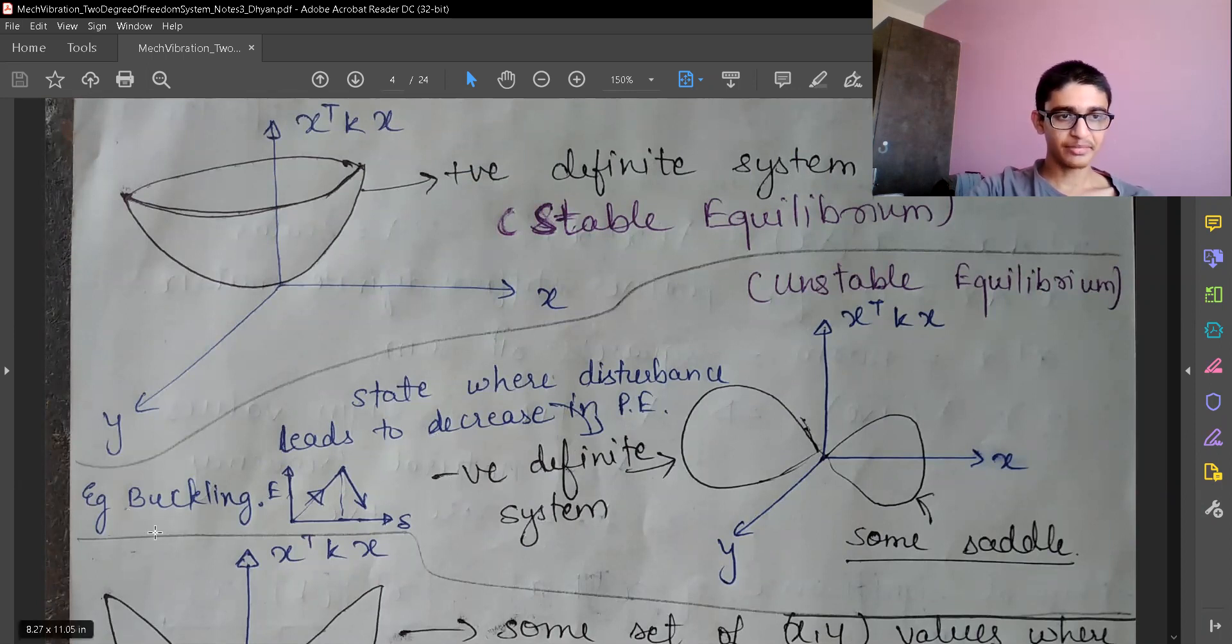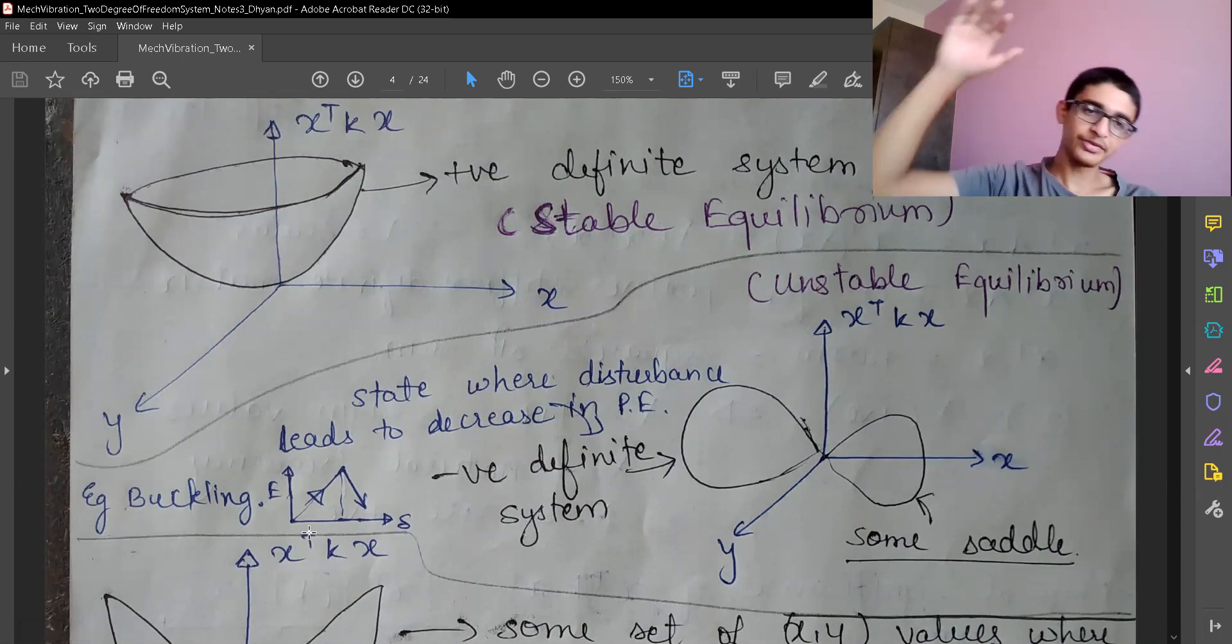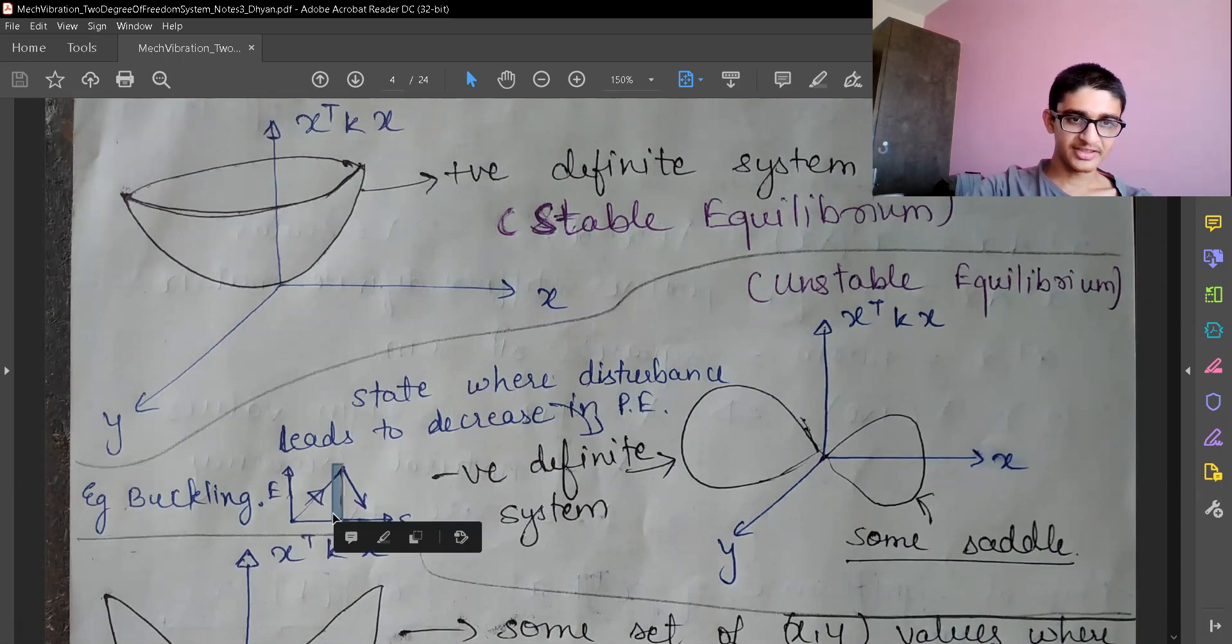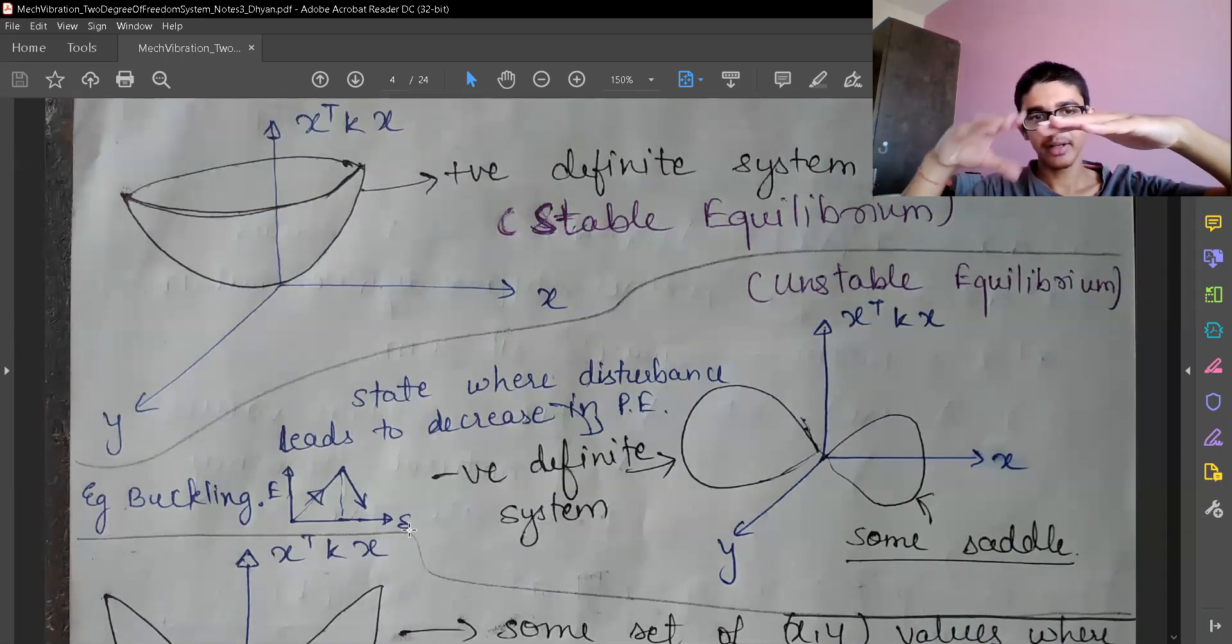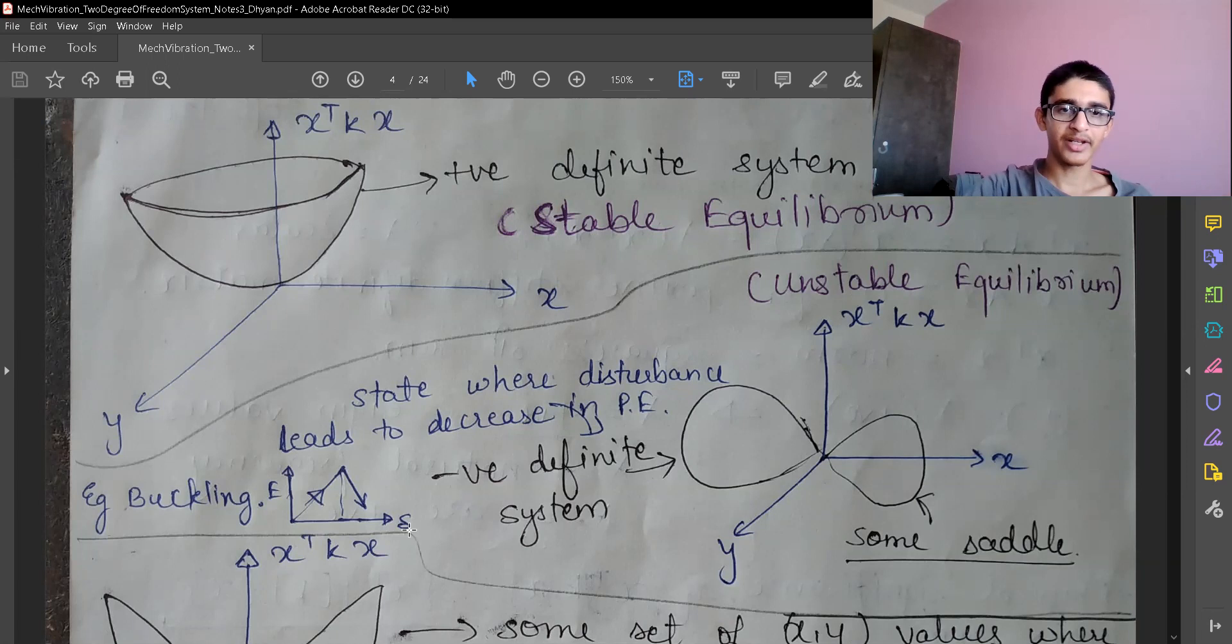One system can be buckling, where we give some compressive force to the beam. Till one point it will absorb all the energy. After some point - this point, this is the deflection delta - it will break apart. From in between somewhere where the highest energy was, it will break apart and we have buckling.